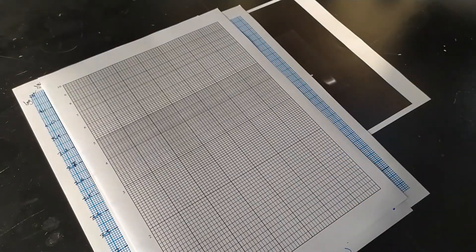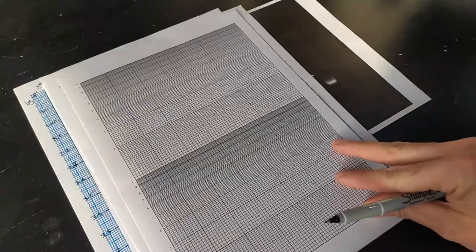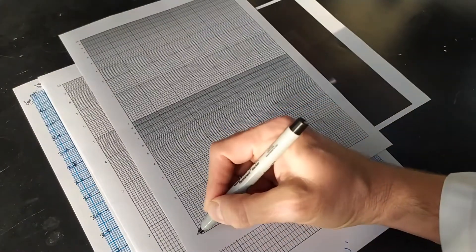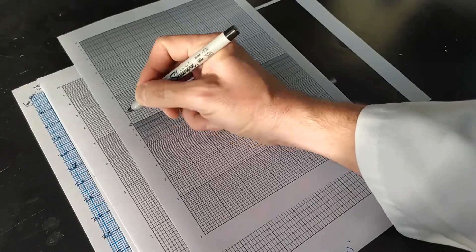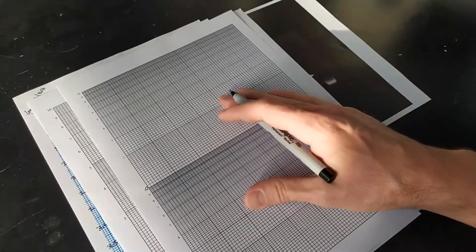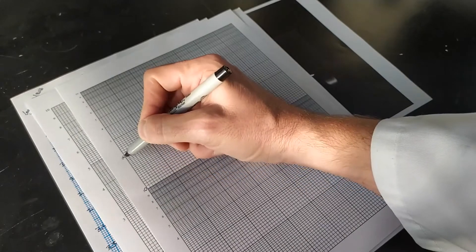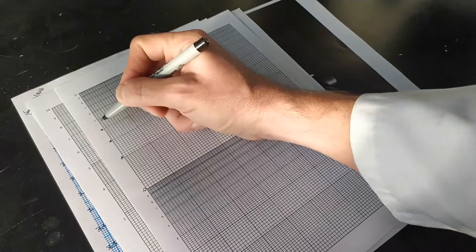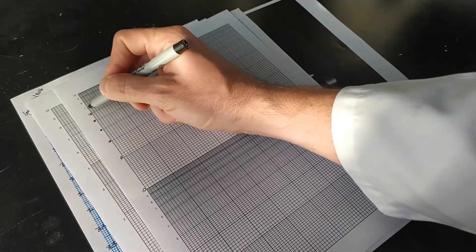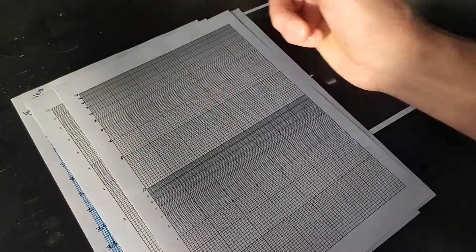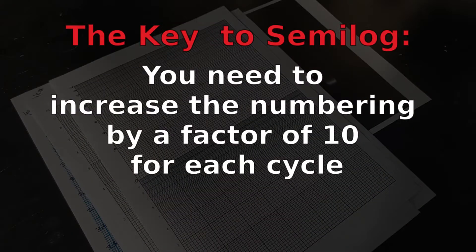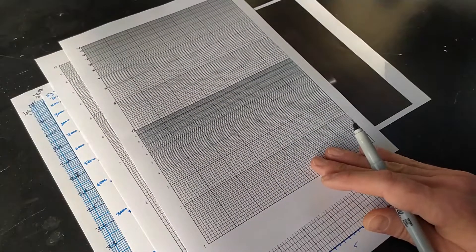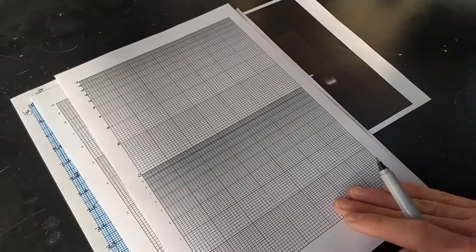You can also have two cycles. What you have here is again 1 at the bottom, then 2, 3, 4, 5, 6, 7, 8, 9, and this would be 10 — that's one cycle. Then the second cycle starts from 10, and becomes 20, 30, 40, 50, 60, 70, 80, 90, and 100. I think this is the part that gets most students confused. Basically, every time you go to a higher cycle, all the numbers go up by a factor of 10. So in the first cycle we start at 1 and go up to 10; in the second cycle, we start from 10 and go up to 100.